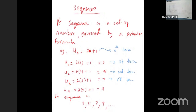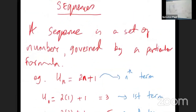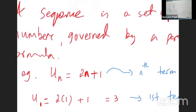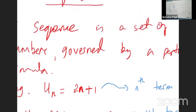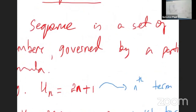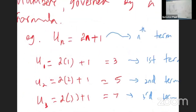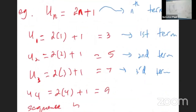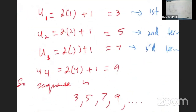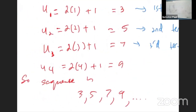A sequence is a set of numbers governed by a particular formula. For example, if I give you a simple sequence where u_n equals 2n plus 1, we could find the first four terms by plugging in n equals 1, 2, 3, and 4. You'll end up with the first four terms of the sequence. That's a nice simple sequence.